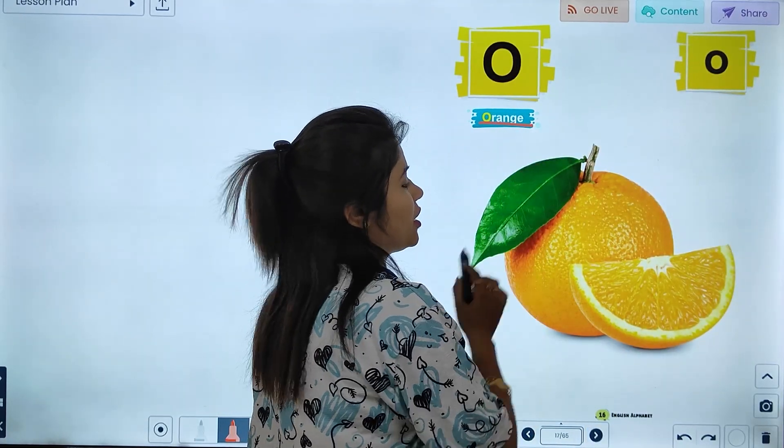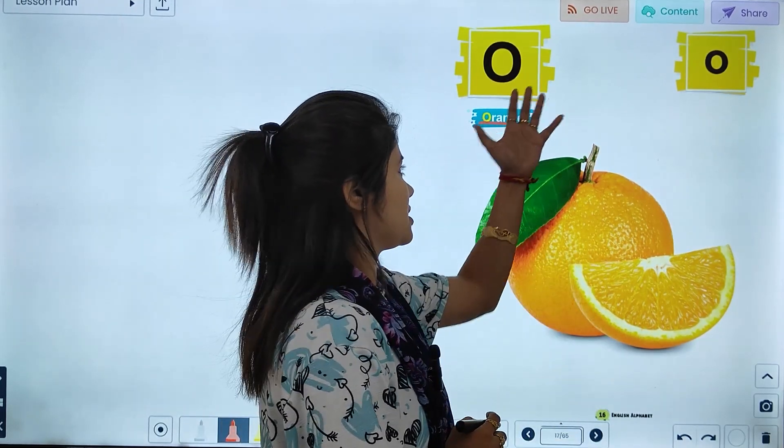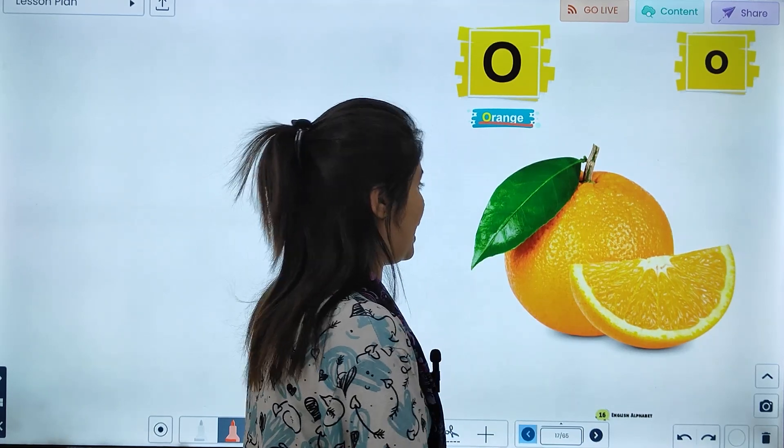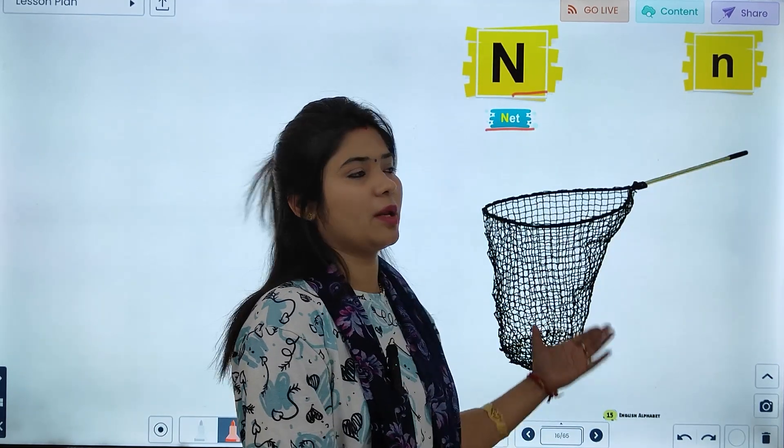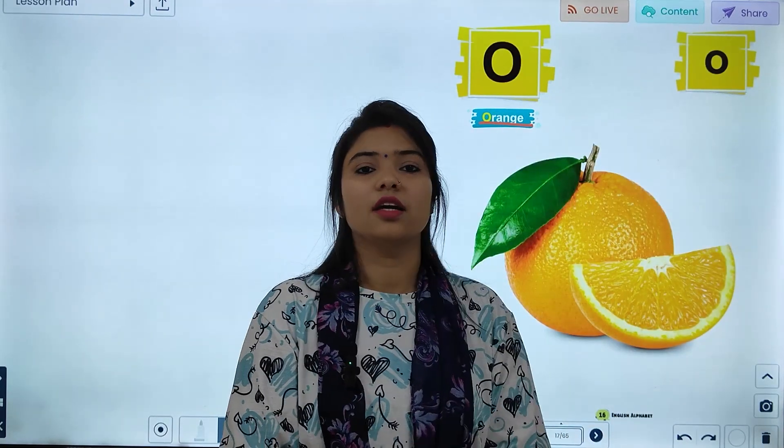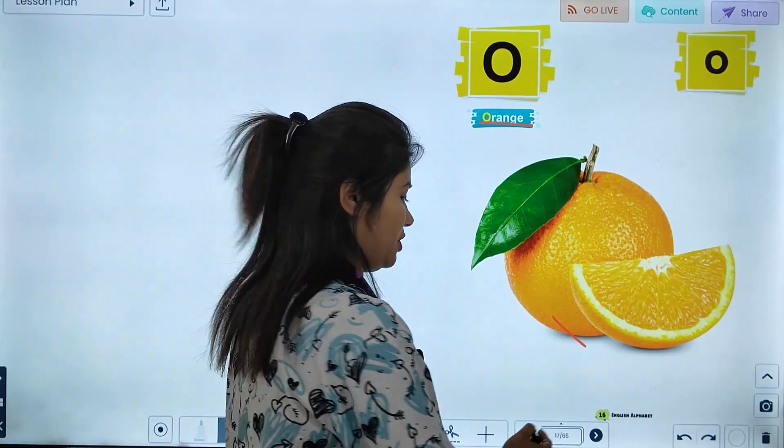O, O, say Orange. So, O is our picture. O for Orange. You can see the picture here. O, say Orange. So, O is our picture. This picture is made.